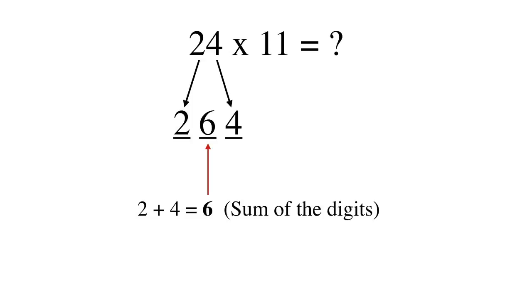I repeat. We split 24 and write 2 and 4 with one digit separation between them. Then in that space we write 6 which is the sum of the digits 2 and 4. It's that simple.